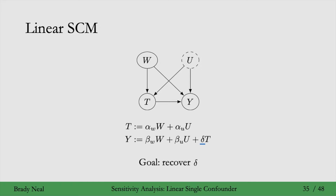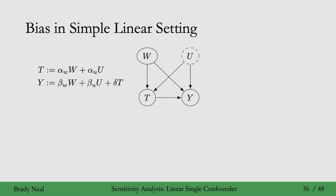The reason delta is the causal effect of T on Y is because delta is what's in front of T in the structural equation that generates Y. When T changes, the way that Y changes depends on delta — if T goes from 0 to 1, then Y increases by delta, holding everything else constant. In this simple linear setting, it turns out we can actually get the bias in a closed-form expression.